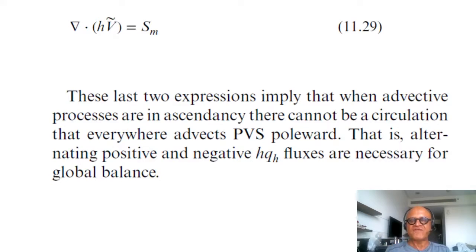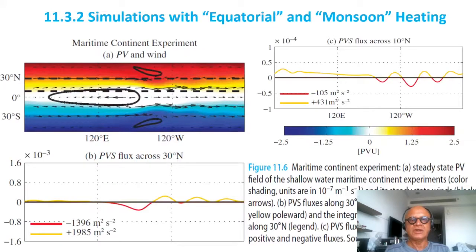In this case there has to be a compensating return flow. Alternating positive and negative HQH fluxes are necessary for global balance. So this is just confirming what we saw from observations and confirming what we derived from the full equations of motion on an isentropic coordinate.